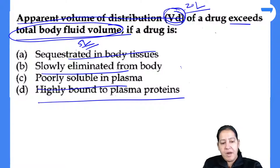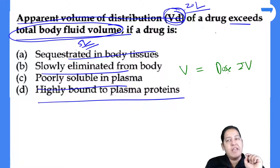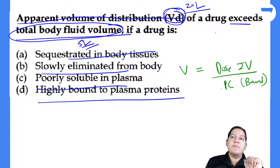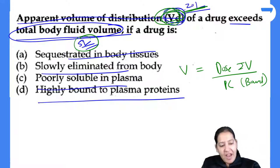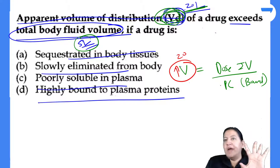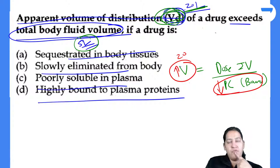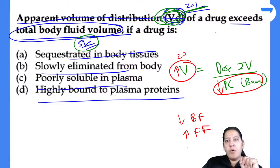The examiner is asking for volume of distribution that exceeds — meaning high value. High volume of distribution means low bound form, and low bound form means high free form. Free form goes to tissue, bound stays in blood. So blood mein kam, tissue mein zyada — hence A is the answer: drug is sequestered in the tissue. Not D (highly bound to plasma protein).